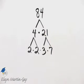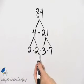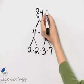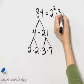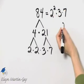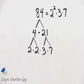And 84 as a product of primes is 2 times 2 times 3 times 7, or we can write it as 2 squared times 3 times 7, and you can certainly check by multiplying.